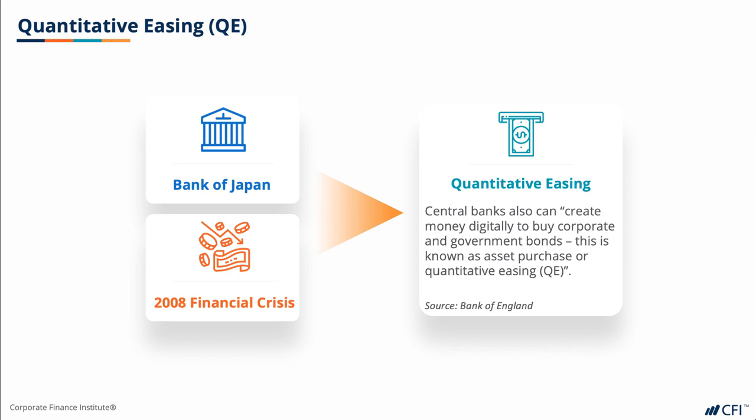Proponents of this conventional policy were worried that the central bank's balance sheets would become bloated with assets and could interfere in the natural operation of the capital markets. However, it was such desperate times, and in hindsight, one may argue that these coordinated efforts, such as QE, saved the global economy from falling further into recession.